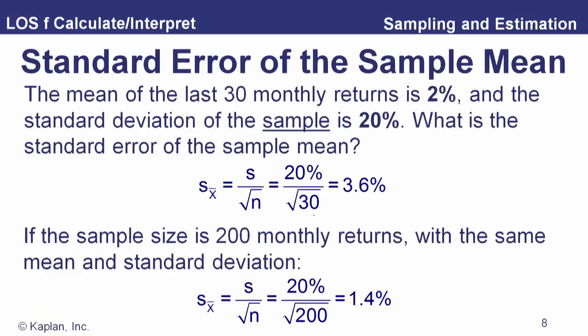In another example, the mean of the last 30 monthly returns is 2%, and the standard deviation of the sample is 20%. The standard error is 20% divided by the square root of 30, which gives 3.6%. If the sample size were larger — say 200 monthly returns — we'd divide by the square root of 200, and the standard error of the sample mean drops to 1.4%.